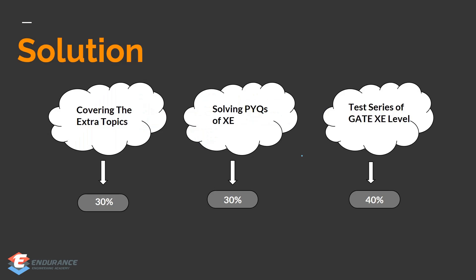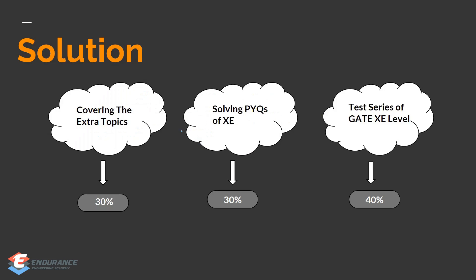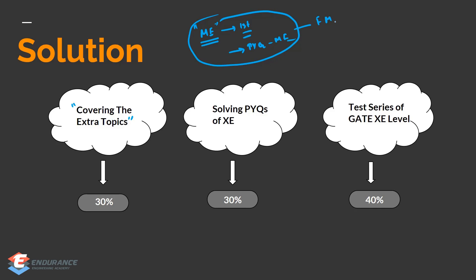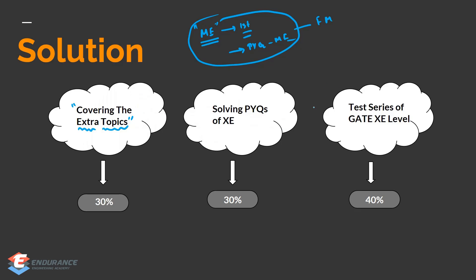Now coming to solutions. Two problems: excess syllabus and higher level of questions. How to tackle them? The first step is to cover the ME syllabus — prepare all the topics present in ME and solve all the previous year questions corresponding to ME. After that, cover the extra topics specific to XC — Reynolds Transport Theorem, Navier-Stokes, ideal fluid flow, etc.